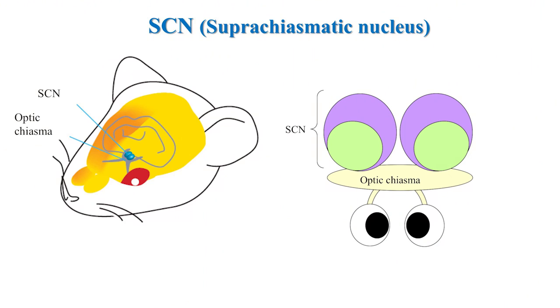Circadian rhythms in mammals are controlled by the suprachiasmatic nucleus, referred to as SCN. The SCN is found in the hypothalamus right on top of the optic chiasm, where the two optic nerves from the eyes cross. The optic nerve delivers light input from the retina.